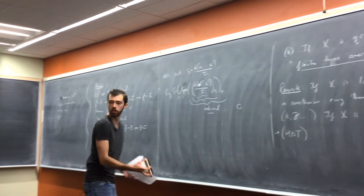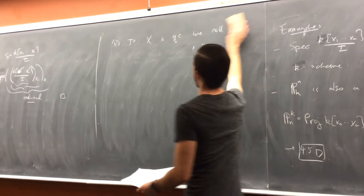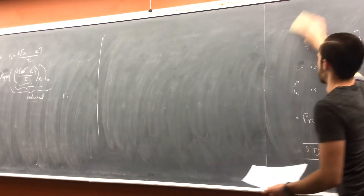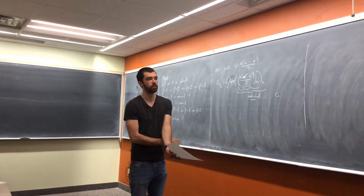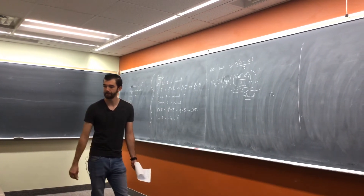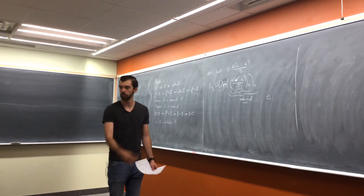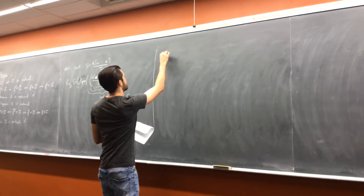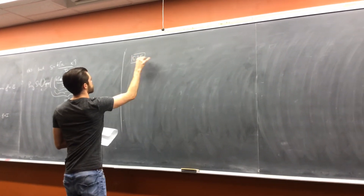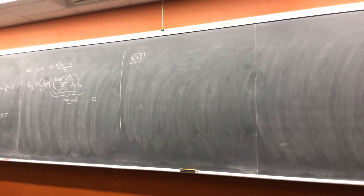Apparently we need this separatedness condition for varieties in general. Separatedness is this analogy of a Hausdorff condition — it rules out pathologies. Like when you double up the origin and glue the affine line to itself and just get two origins — you don't want that to happen. But that takes more machinery, which is why we can't do it now. So now begins kind of the wrap-up of everything left in section 5.3.